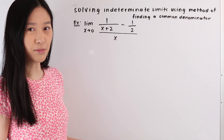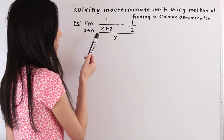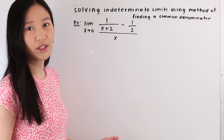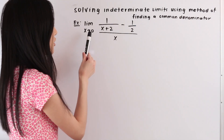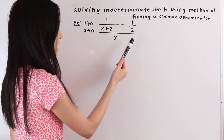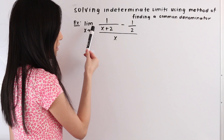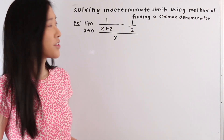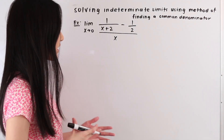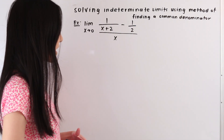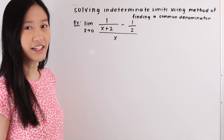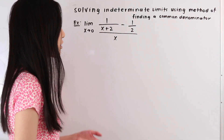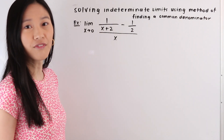So now let's take a look at this next example. We have the limit as x approaches 0 of the function 1 over x plus 2 minus 1 half, all over x. The first thing we do is plug in this value for a into our function f of x. We see that if we plug in 0, we get 0 over 0, which is an indeterminate form. We can't use factoring or expansion here, and we notice that our function is a complex rational fraction because we have fractional terms within our fraction. So we're going to use the method of finding a common denominator.